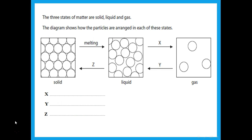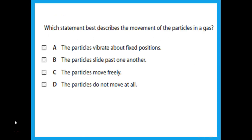Three states of matter — solid, liquid, and gas. The diagram shows how particles are arranged in each state with arrows. Take note of the direction of the arrows: X goes from liquid to gas, so X is boiling. Y goes the other way, from gas to liquid, so Y is condensing. Z goes from liquid to solid, so Z is freezing.